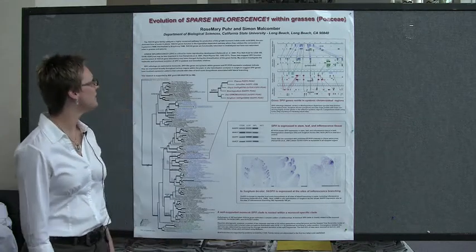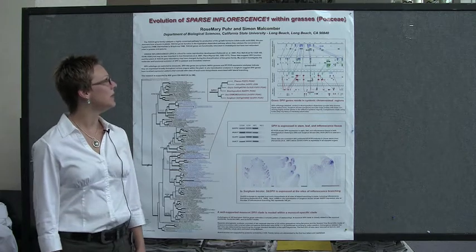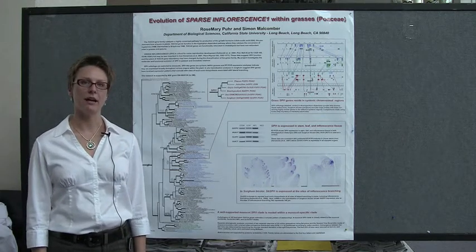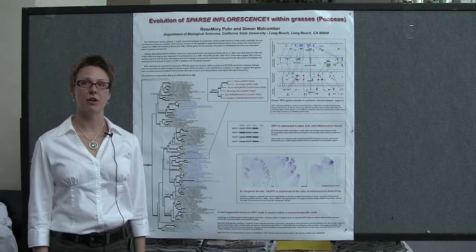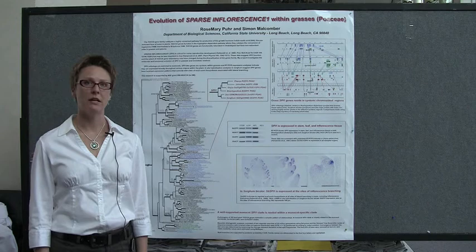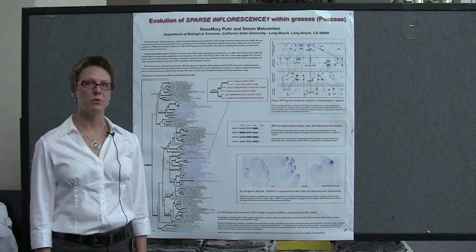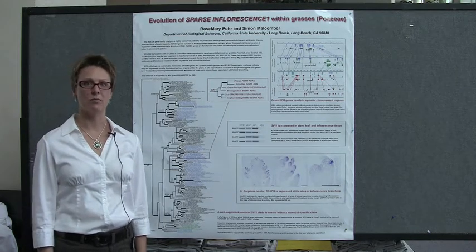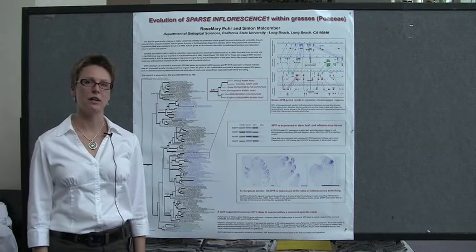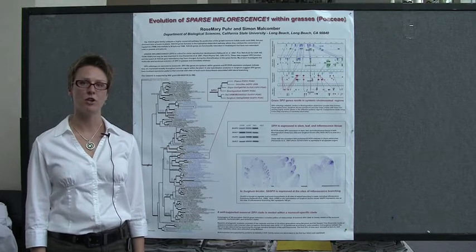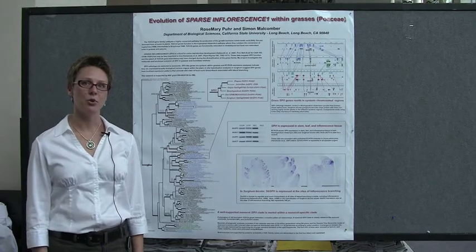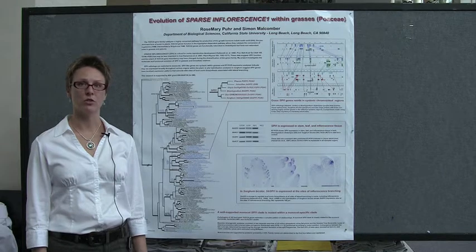SPI1 was first characterized in maize, and in maize, when you knock out SPI1, it has a severe inflorescence phenotype. When the same gene is looked at in rice, there is not an inflorescence phenotype, which suggests diversification of function somewhere within the grass family. So that's really what my project is about — investigating that diversification.